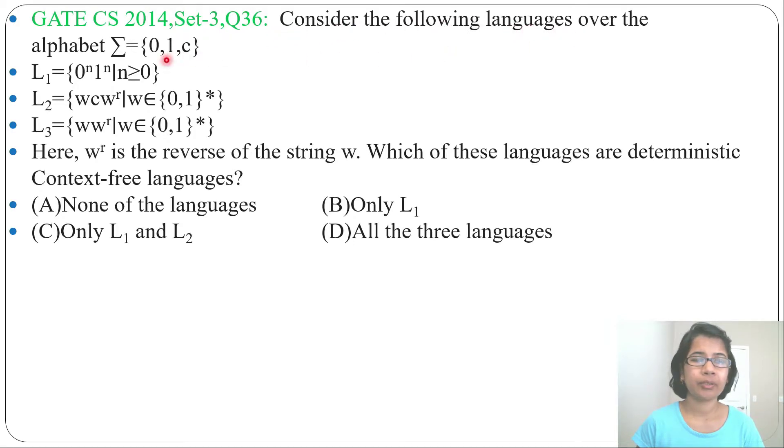Consider the following languages over the alphabet {0, 1, c}. L1 = {0^n 1^n | n ≥ 0}.